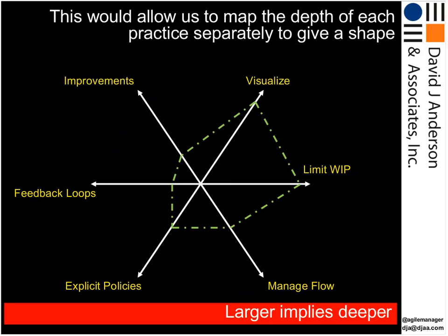What is valuable about this style of diagram is there is no implied sequence — you could start simply with making policies explicit and not necessarily with visualization or limiting WIP. We can use this chart to plot the depth of separate practices. For example, really good visualization and a strong Kanban system implementation, while managing flow, explicit policies, feedback loops, and improvement are not quite as developed. We plot the points, join them up to get a shape, and the larger the shape, the greater the depth of implementation.